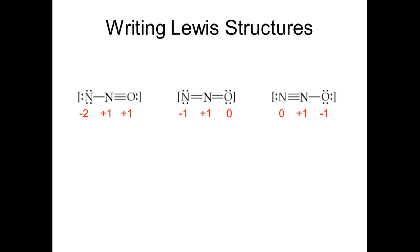Both of the remaining structures have formal charges of plus one, zero, and minus one. The third rule says that the negative charge should be on the most electronegative element, which is oxygen in this case. So the preferred structure has a triple bond between the nitrogen atoms. There are two problems to do on the problem sheet for this part of the lesson.